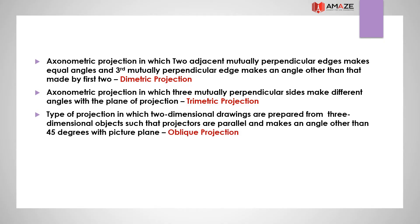A type of projection in which two-dimensional drawings are prepared from three-dimensional objects such that projectors are parallel and make an angle other than 45 degrees with the picture plane is called oblique projection. In oblique projection, the projectors are parallel, the line of sight is parallel, and the line of sight makes an angle other than 45 degrees with the picture plane.